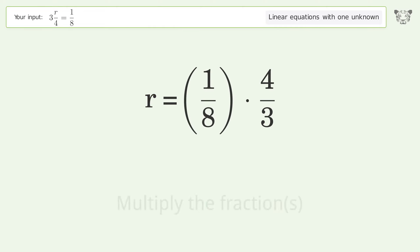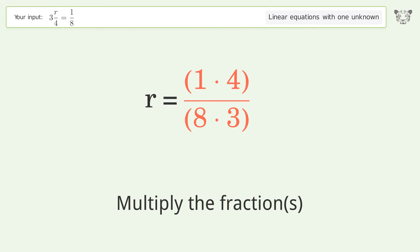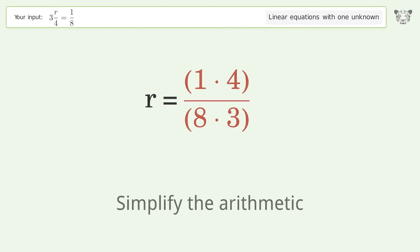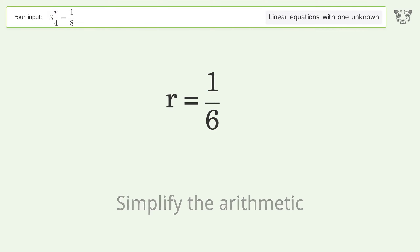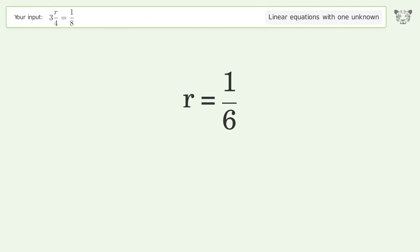Multiply the fractions and simplify the arithmetic. The final result is r equals 1 over 6.